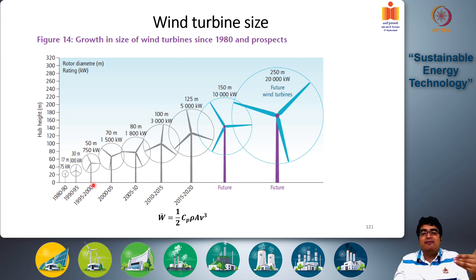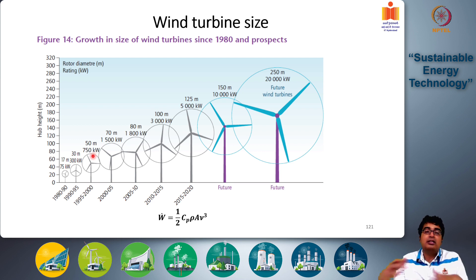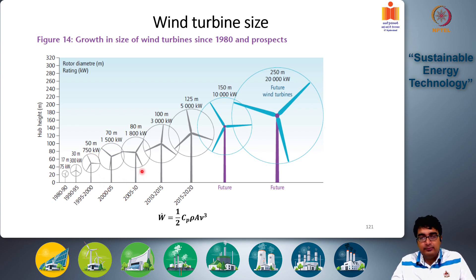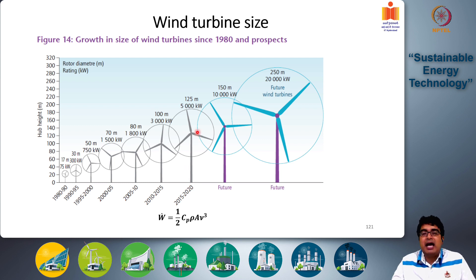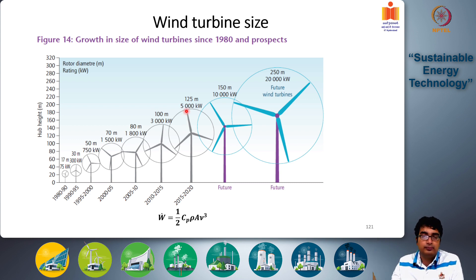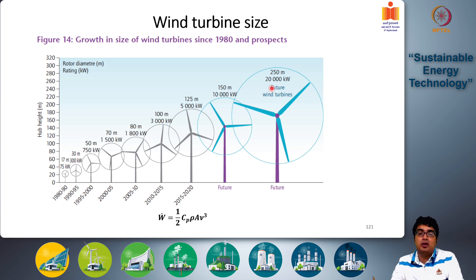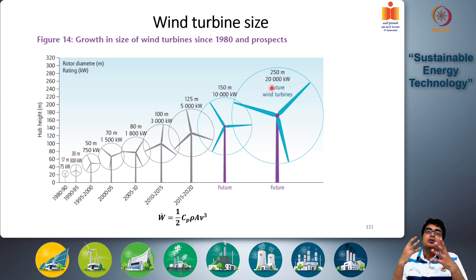By around 1995-2000, the average diameter grew to 50 meters and average power output rose to 750 kilowatts — a 10-fold increase. By 2005-2010, diameters reached 80 meters and rated power reached 5 megawatts. This trend is expected to continue, with turbines projected to reach 150-meter diameters and outputs of up to 20 megawatts.